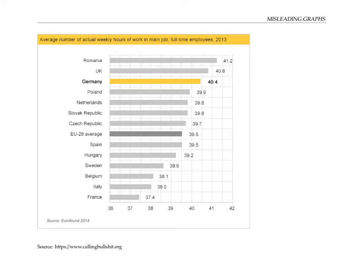With the bar graph, our eyes tend to read the length of the bar as proportional to the quantity represented. And that's not the case in this graph, because the axis starts at 36 instead of at zero. This issue is sometimes called axis truncation.